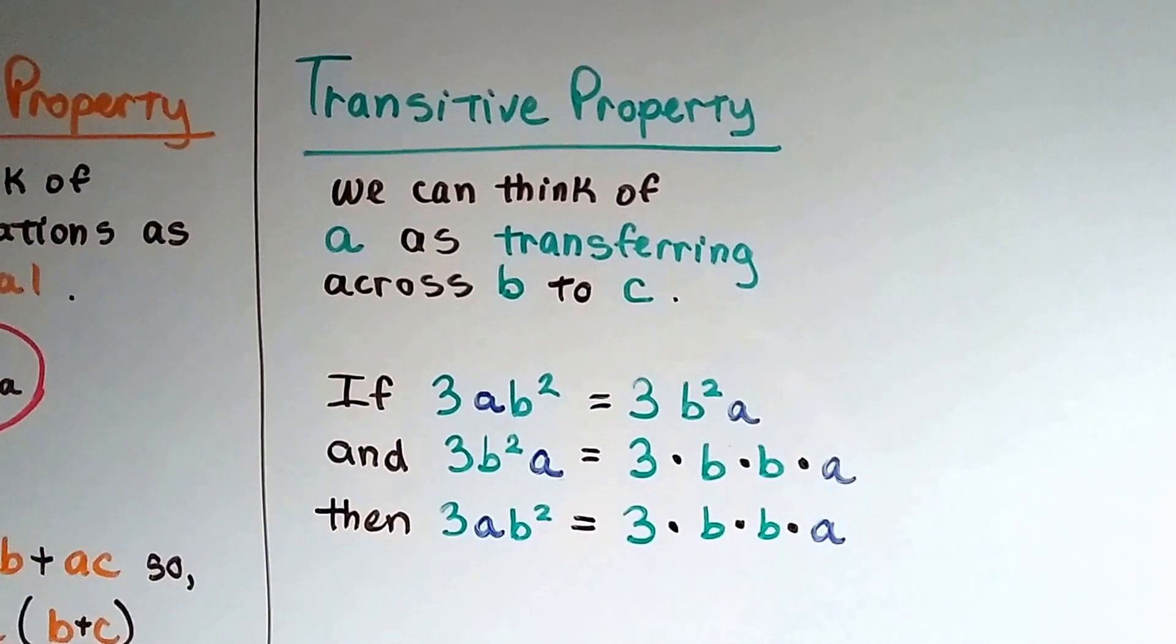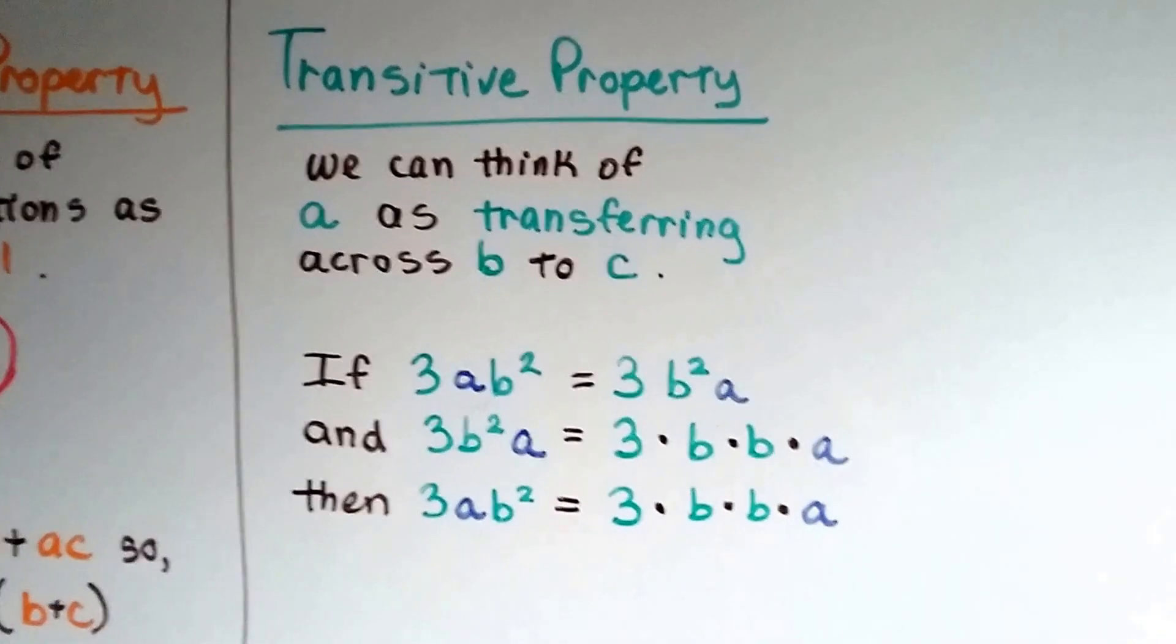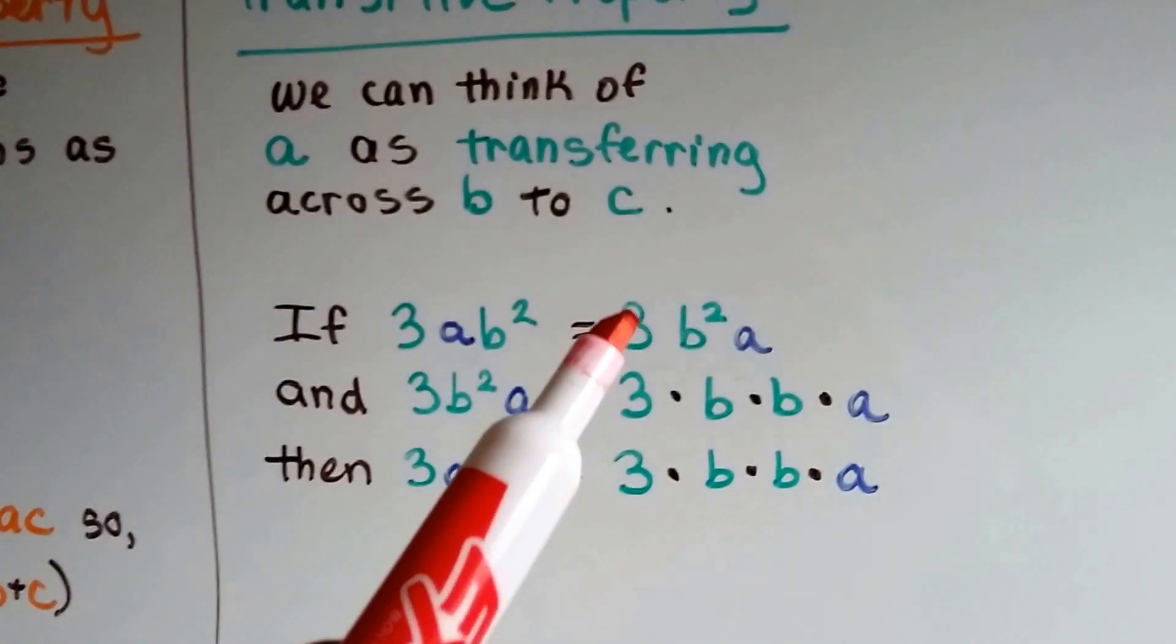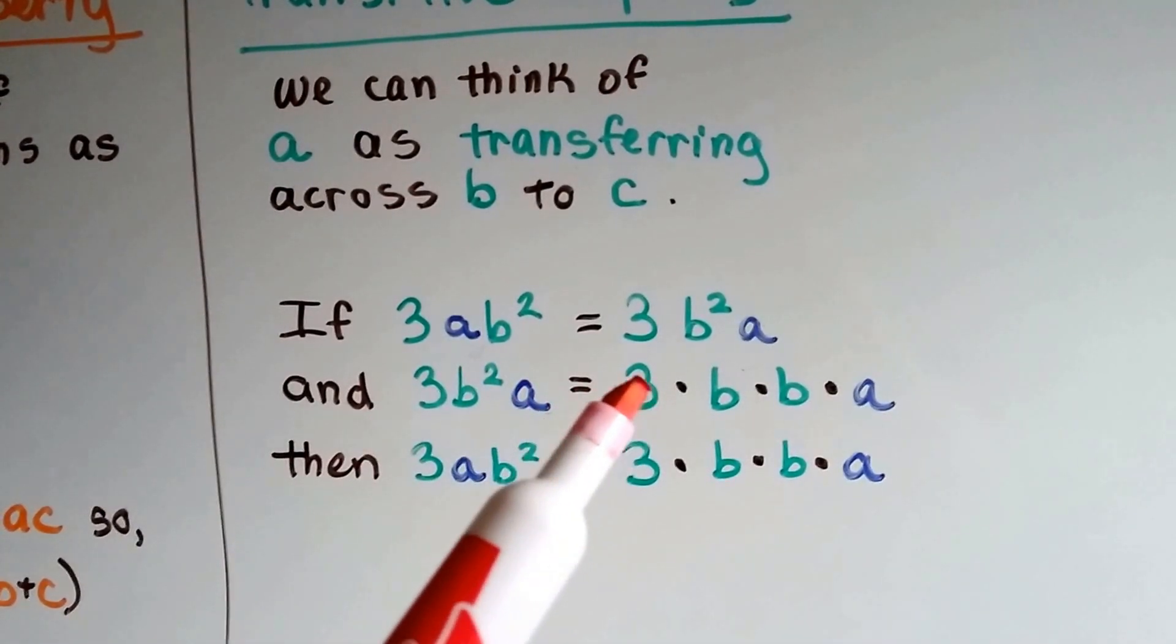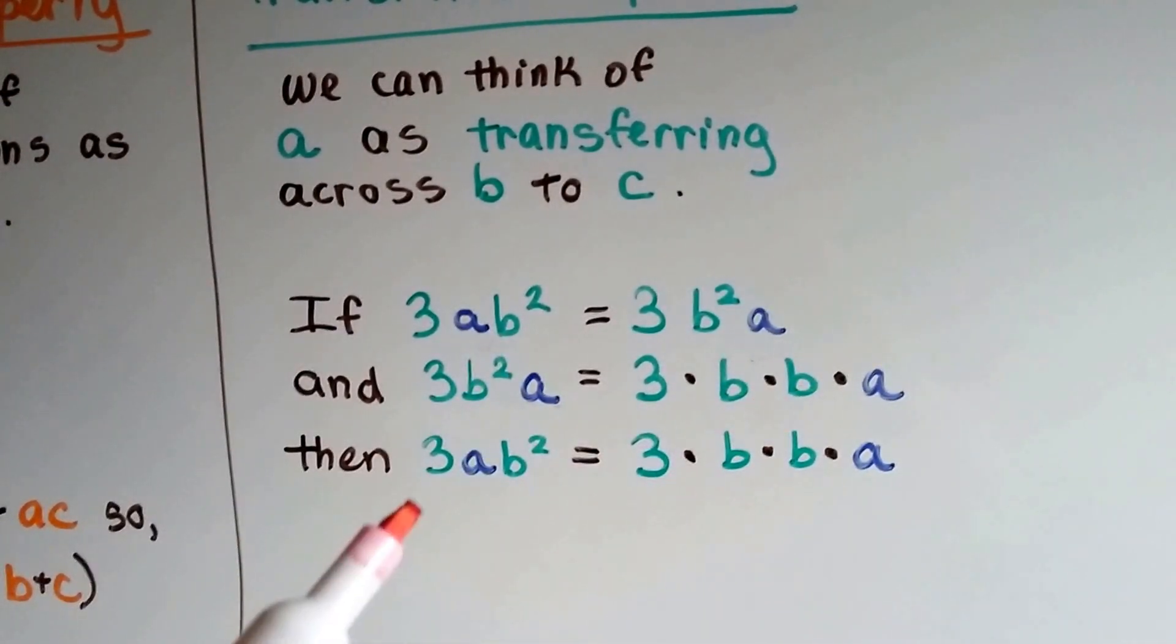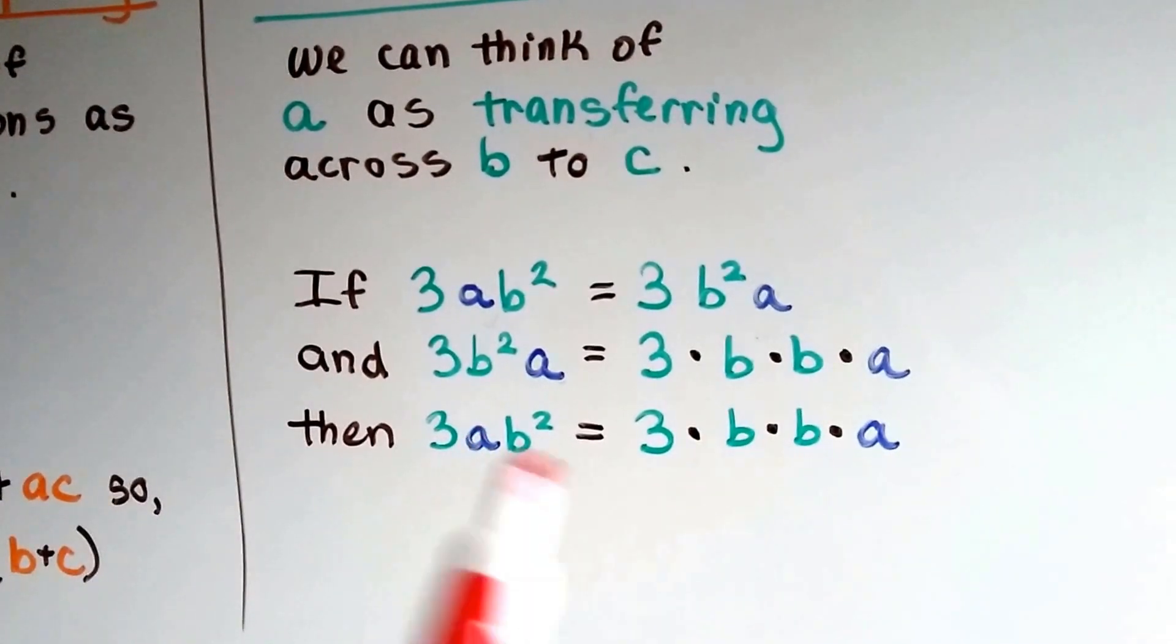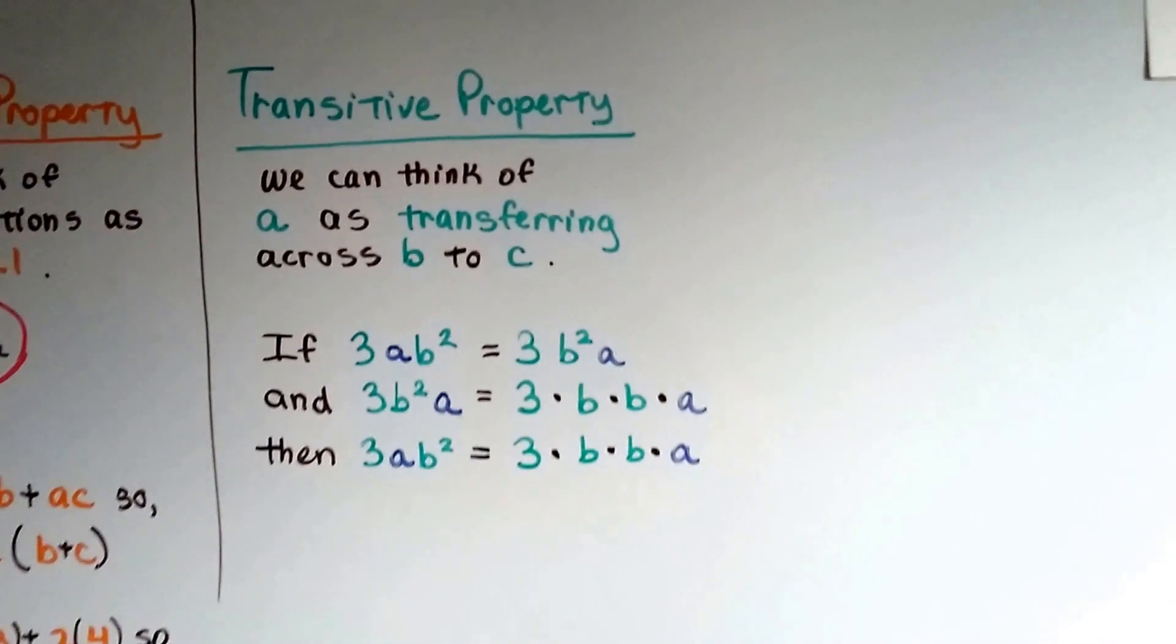And the transitive property, we can think of it as transferring across to b and c. So look at this one. I made the a's different colors, and hopefully you can see these colors. If 3ab squared is equal to 3b squared a, and 3b squared a equals 3 times b times b times a, because remember that means b times b, then that means this first one, 3ab squared, is also equal to 3 times b times b times a. And it wouldn't matter which order we multiplied them in. It would still equal the same thing. But that's the transitive property.